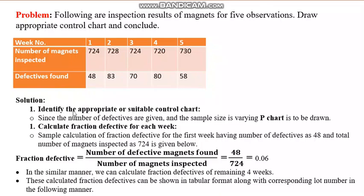Since defectives are given, it is attribute data — either a P chart or an NP chart. To choose between them: if the sample size varies, use the P chart; if it is constant, use the NP chart. Here the number inspected varies each week (724, then different numbers), so we use the P chart.